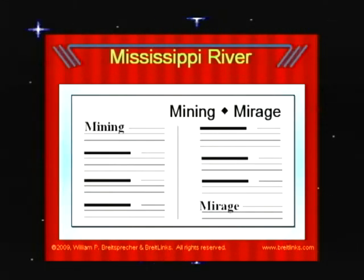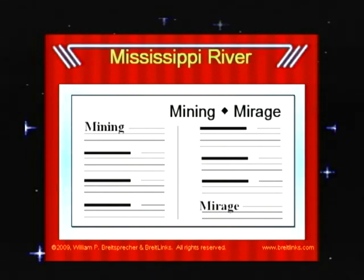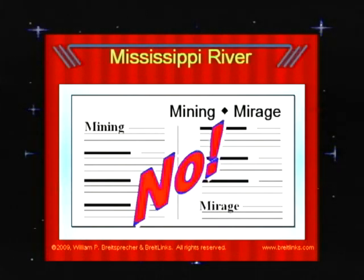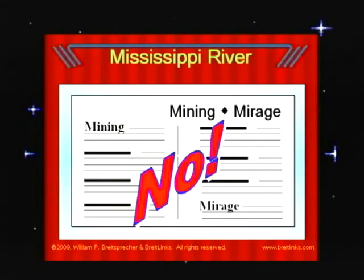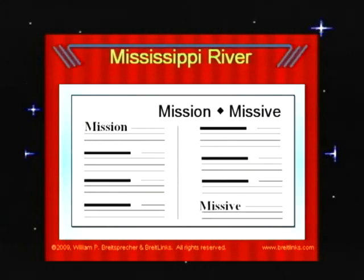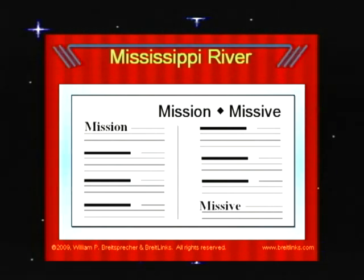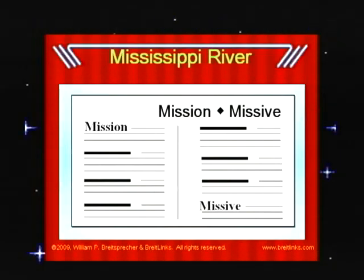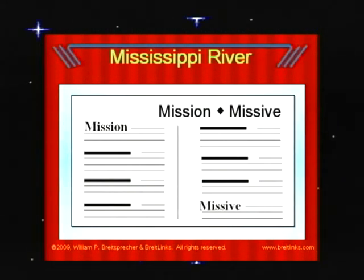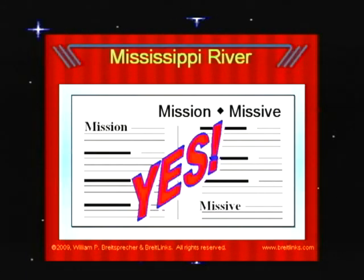Here's another example: Mississippi River. The first guide word is mining, M-I-N. The second is mirage, M-I-R. You see that M-I-S is after mining, but M-I-S is also after mirage. It can't be on these two pages — we have to keep looking. Here's another page. The first word is mission, M-I-S. The second is missive, M-I-S-S-I-V. Notice how M-I-S-S-I-S certainly does come after M-I-S-S-I-O, and M-I-S-S-I-S does come before M-I-S-S-I-V because S comes before V. Mississippi River would be listed somewhere on those two pages.